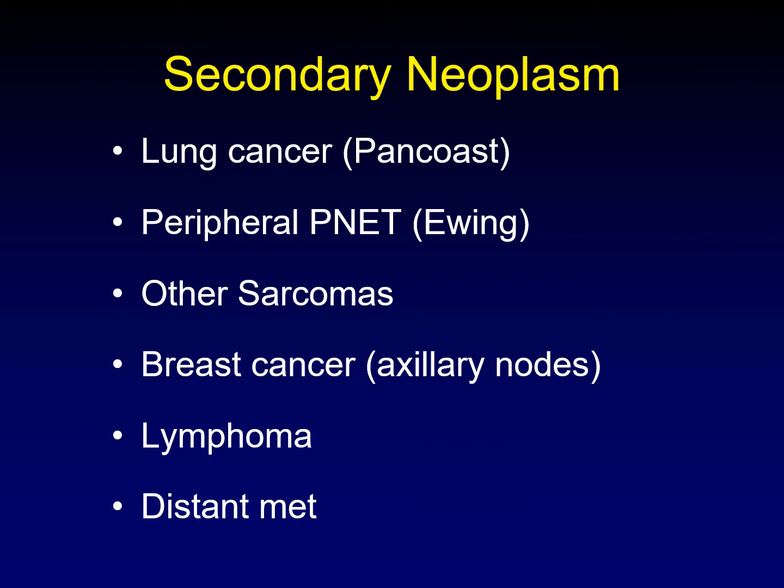Let's talk about secondary neoplasms — malignancies that can affect the brachial plexus. Lung cancer of the apex famously can invade up through the chest wall into the brachial plexus; we call it a pancoast tumor. A peripheral PNET, which is really a Ewing's sarcoma, can affect the chest wall there, along with a variety of other sarcoma subtypes. Breast cancer, again famously, has axillary nodes right near the brachial plexus that can invade into it. Lymphoma can crawl along nerves or arise in the axilla. And occasionally you get a distant metastasis from some random tumor that lands in an axillary node and invades into the brachial plexus.